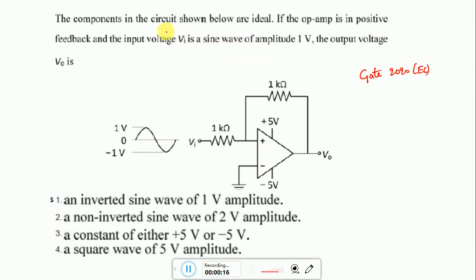So if you look at the question, it is given that the components in the circuit shown below are ideal. If the op-amp is in positive feedback, this is the point to be noted, and the input voltage Vi is a sine wave of amplitude 1V.